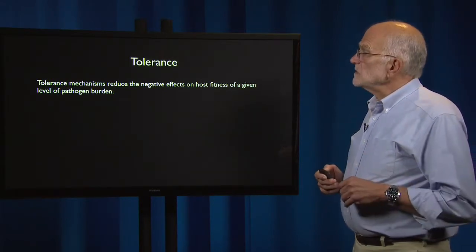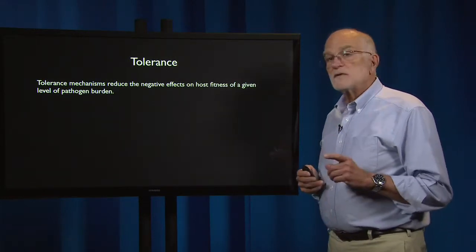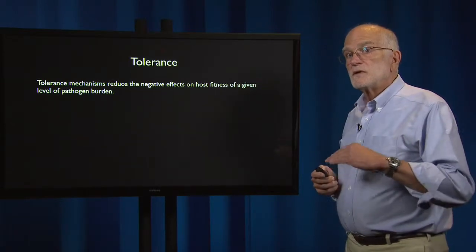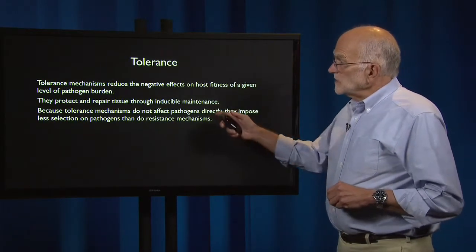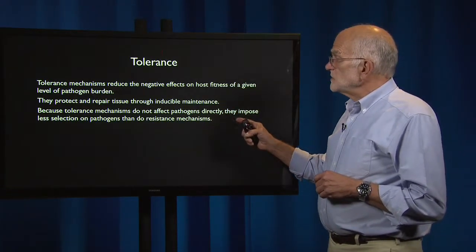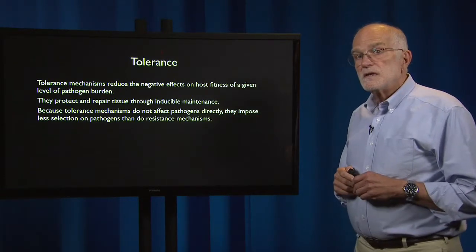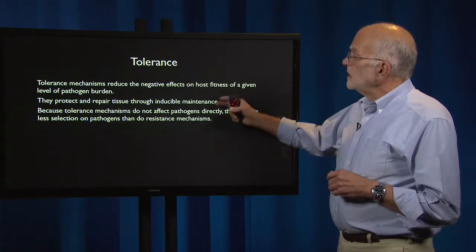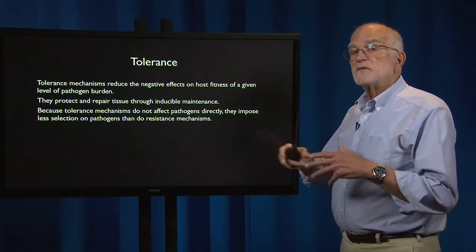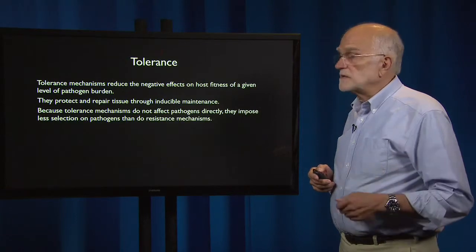There is quite a list of costs and benefits involved in resistance. Tolerance is another way of dealing with environmental insult. Tolerance mechanisms reduce the negative effects on host fitness of a given level of pathogen burden — they probably won't eliminate them but will reduce the impact. They protect and repair tissue through inducible maintenance. Because tolerance mechanisms do not affect pathogens directly, they impose less selection on pathogens than do resistance mechanisms.